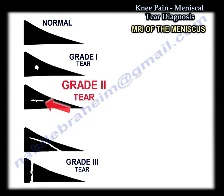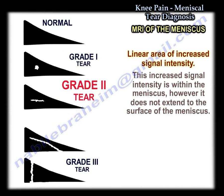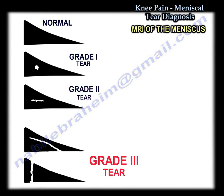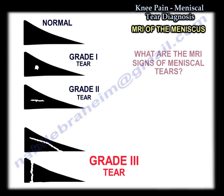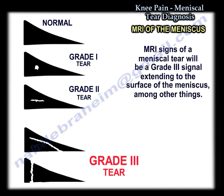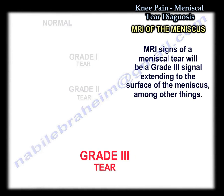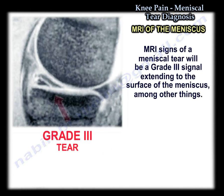In grade two, you will have a linear area of increased signal intensity inside the meniscus that does not go to the surface. In grade three, the tear extends to the articular surface. The MRI signs of meniscal tear include a grade three signal extending to the surface of the meniscus, among other things.